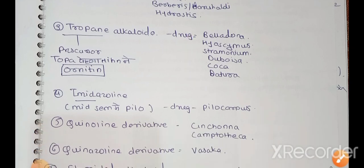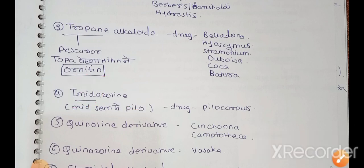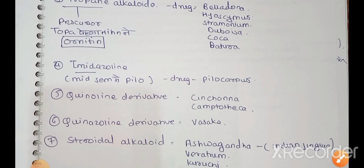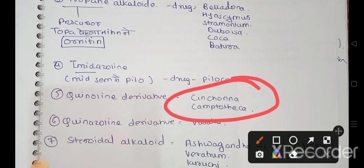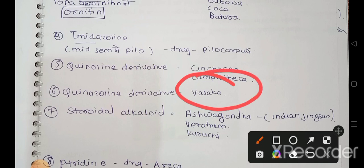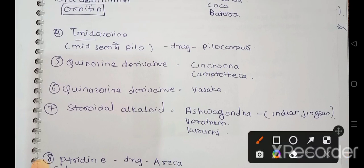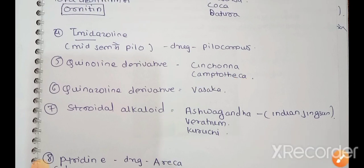Next is imidazoline derivative. The drug that comes under imidazoline derivative - you remember the drug called pilocarpus. The drug that comes under quinoline derivative is cinchona and camptotheca. Then imidazoline derivative drug is vasaka. After that, the steroidal derivative alkaloids - ashwagandha, kurchi, and veratrum. These drugs come under steroidal alkaloids. Ashwagandha is famously known as Indian ginseng.